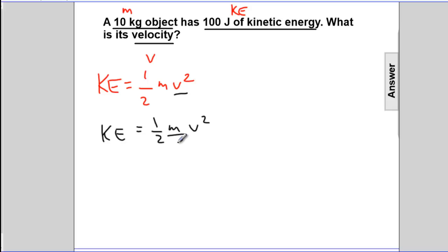If I want to get V by itself, I'll divide by M and multiply both sides by 2. The 2's will cancel, M's will cancel, and we end up with V squared equals 2 times KE divided by M.